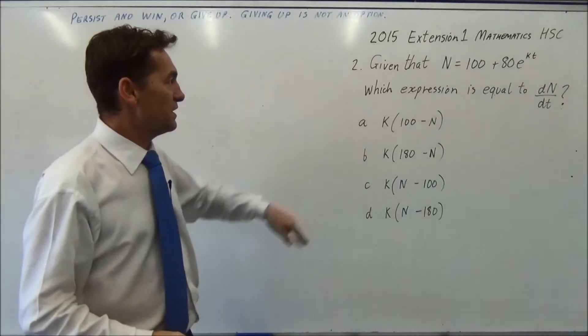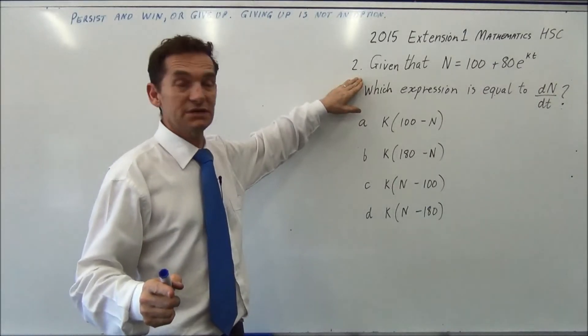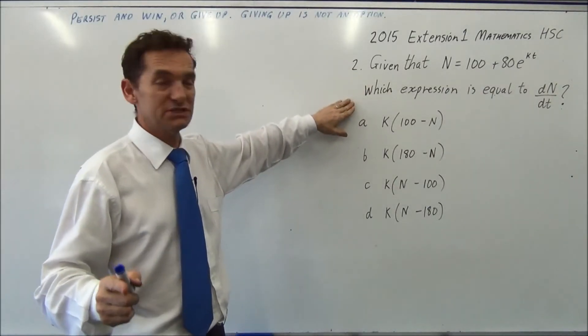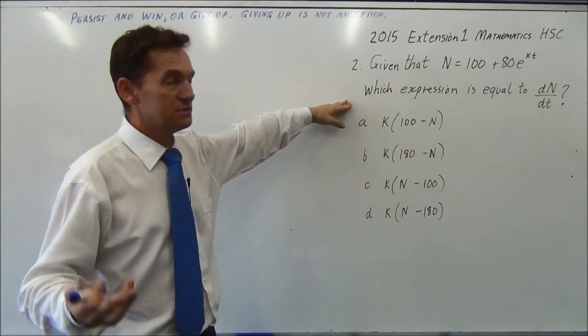Question two. Given that n equals 100 plus 80e to the kt, which expression is equal to dn to t? So all you've got to do is differentiate.